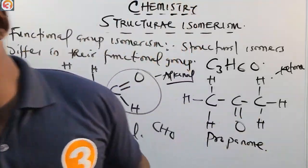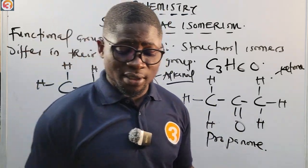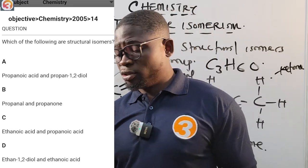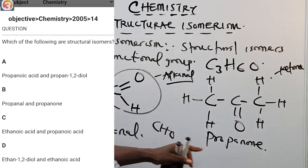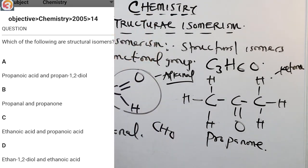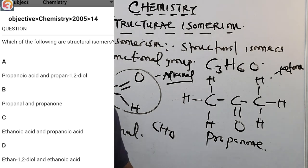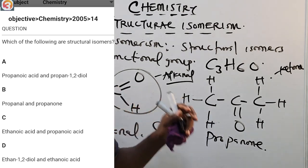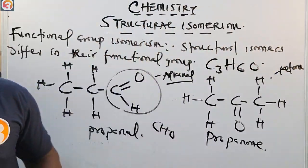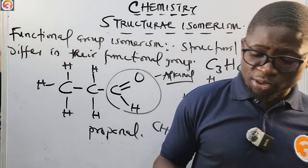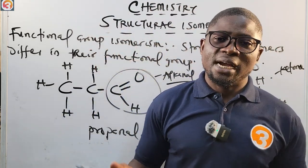Now back to the JAM app question: 2005 number 14 — which of the following are structural isomers? The answer is B, propanal and propanone. They are structural isomers — specifically functional group structural isomers. There are many more questions on the application; go download it and start practicing your way to success. I'll see you in the next episode where we start talking about stereo isomerism. Thank you for watching.